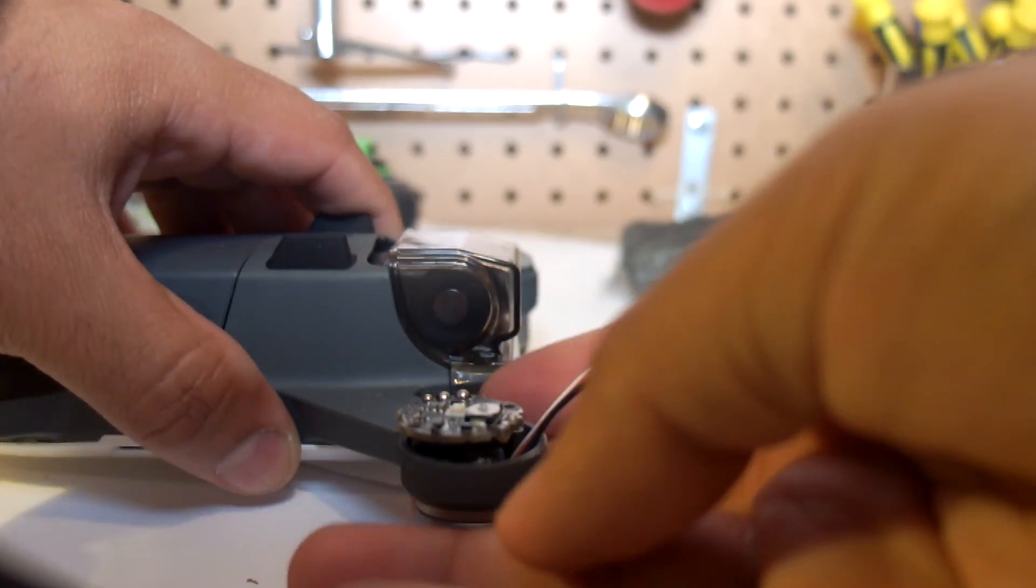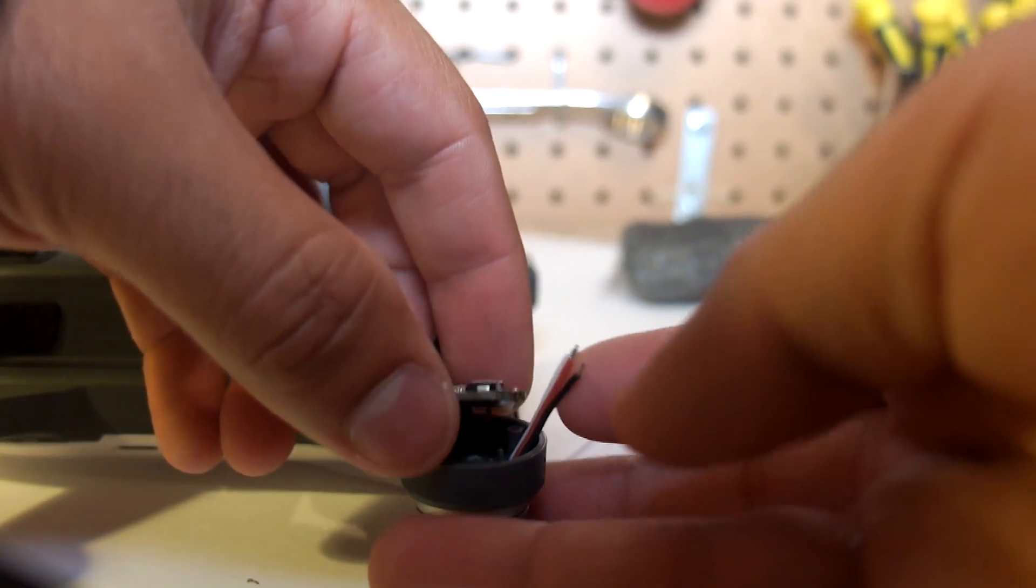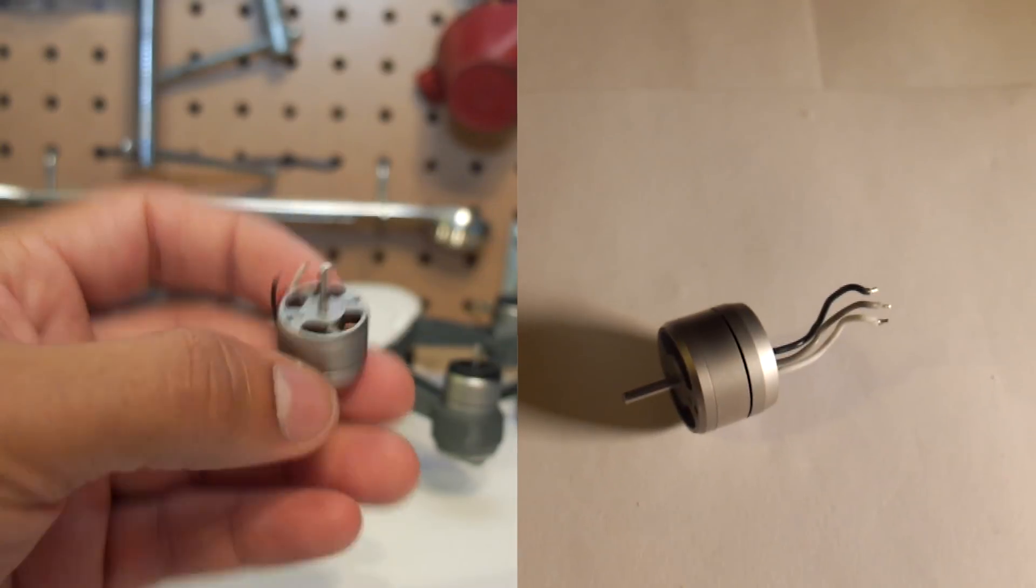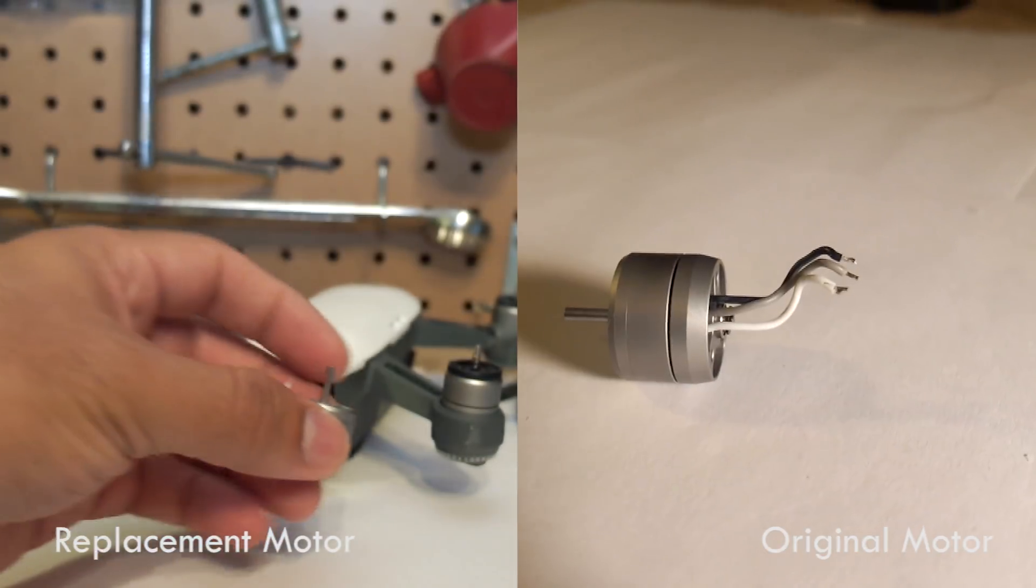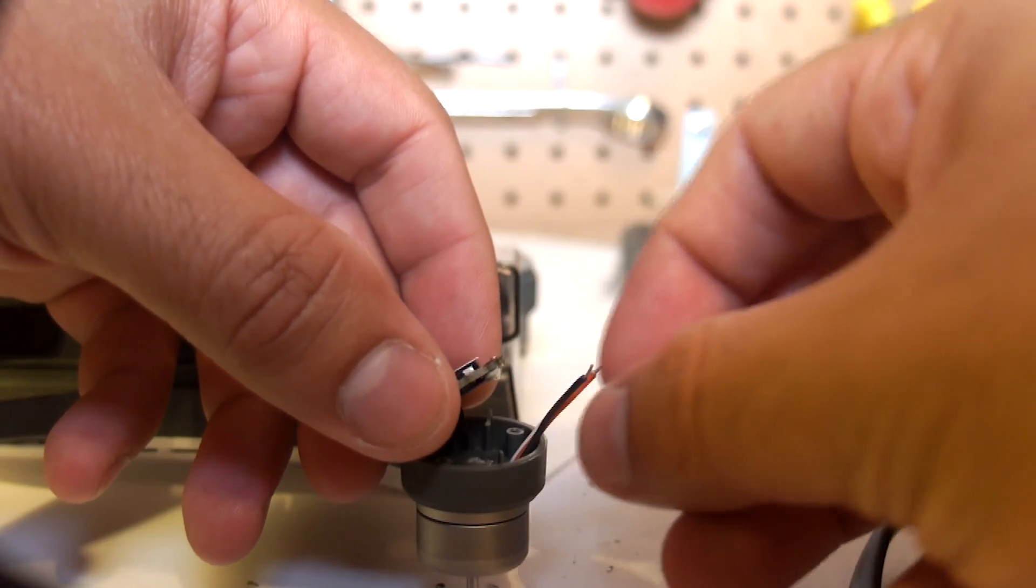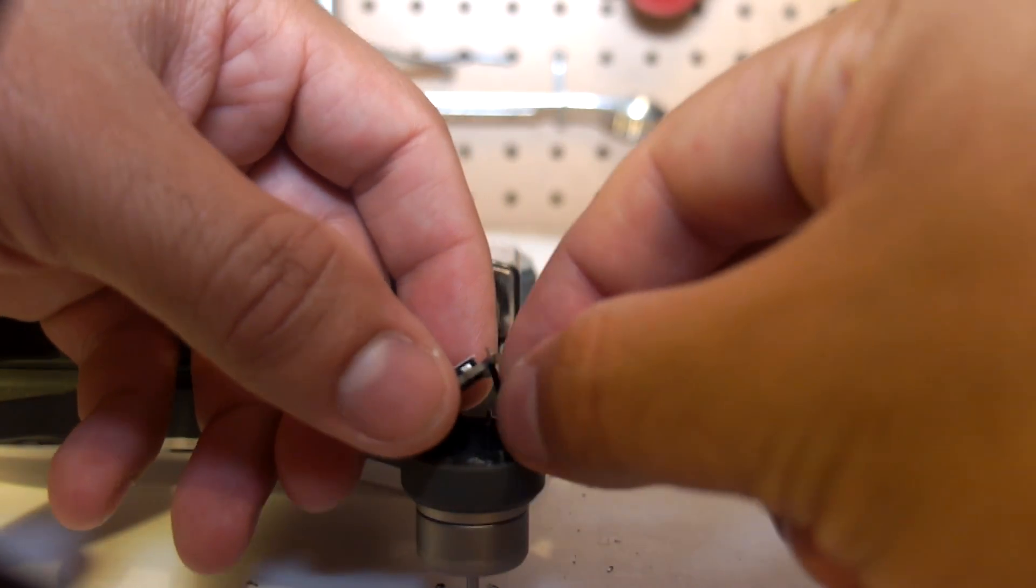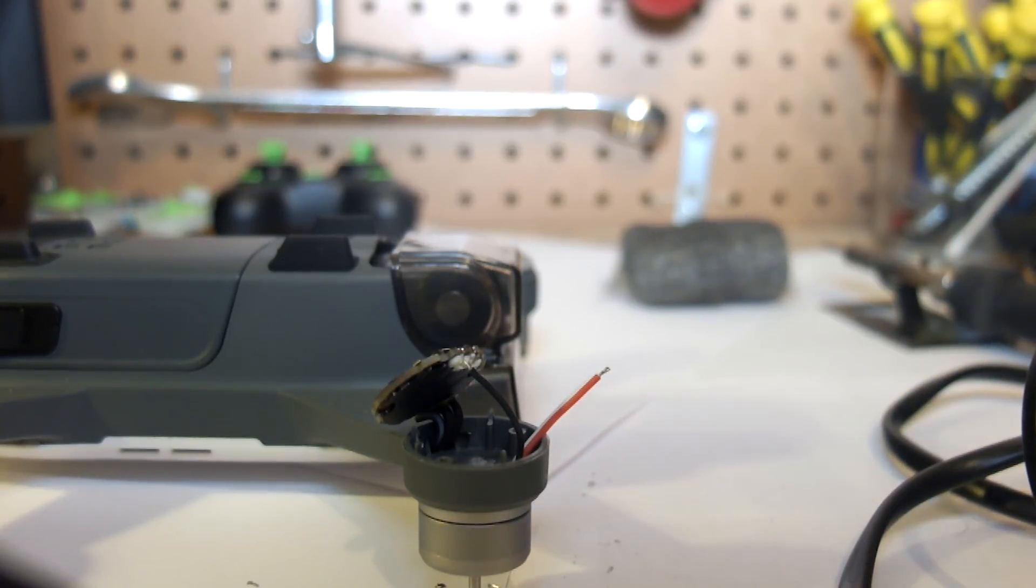Installation begins by threading the three wires from the new motor through the hole in the arm. I'd like to note that the wire colors on the replacement motor that I received did not match the wire colors on the original DJI motor. All I did was match up the position of the wires instead of the color of the wires, and that seemed to work.